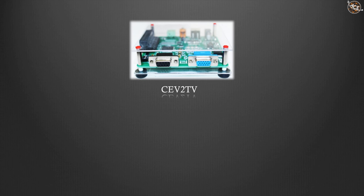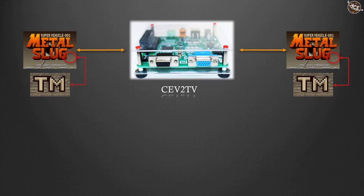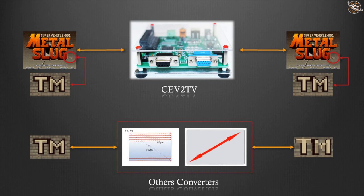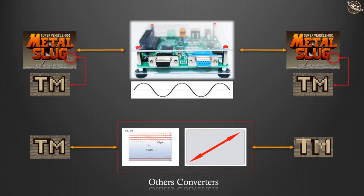Unlike most converters on the market, CV2TV does not alter the original video signal and does not change frequency signals using scan converters. Scan converters and video scalers alter video frequency and resolution, reducing video quality. In CV2TV, the entire project occurs in the analog domain — there are no ADC or video scalers on the board — to ensure maximum video quality and native resolution.